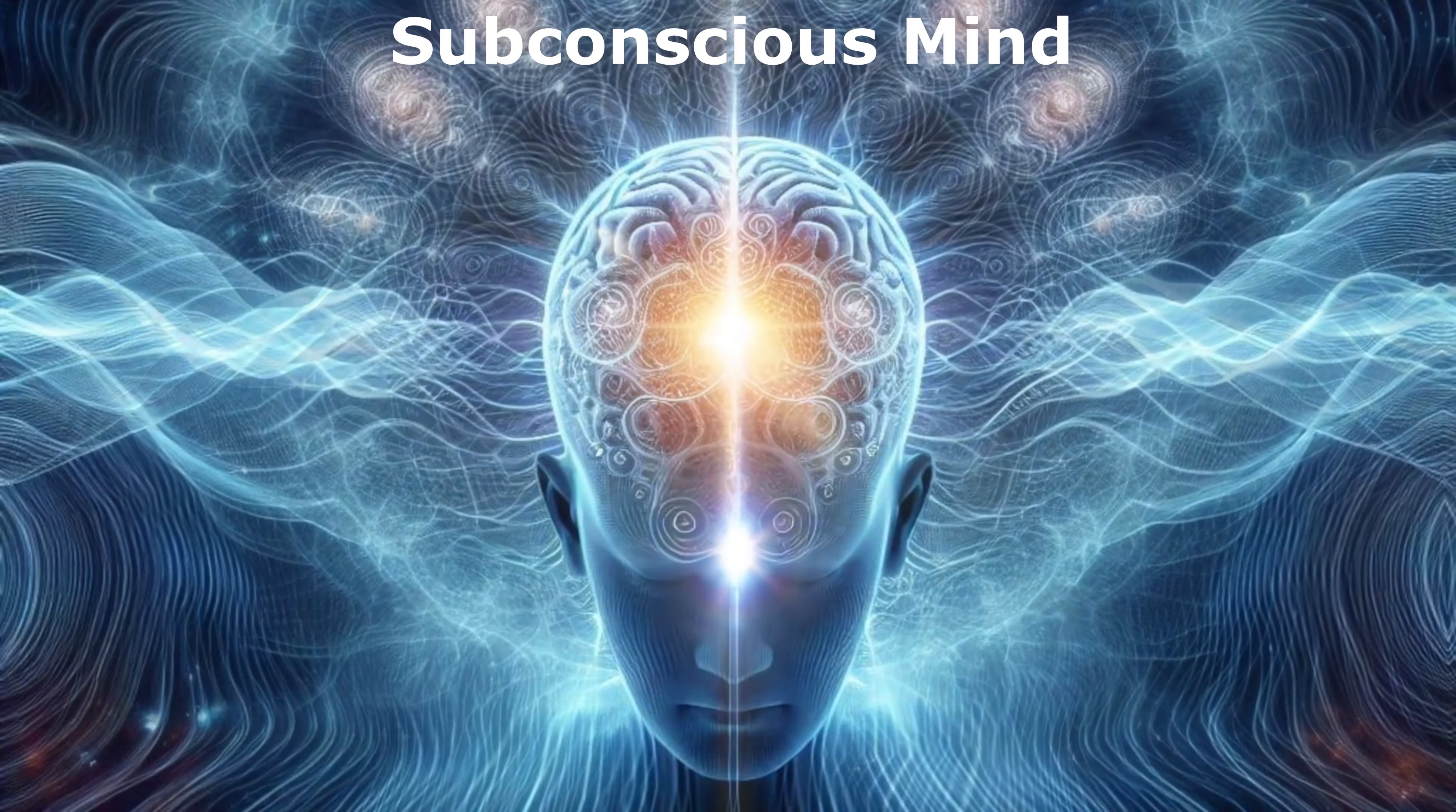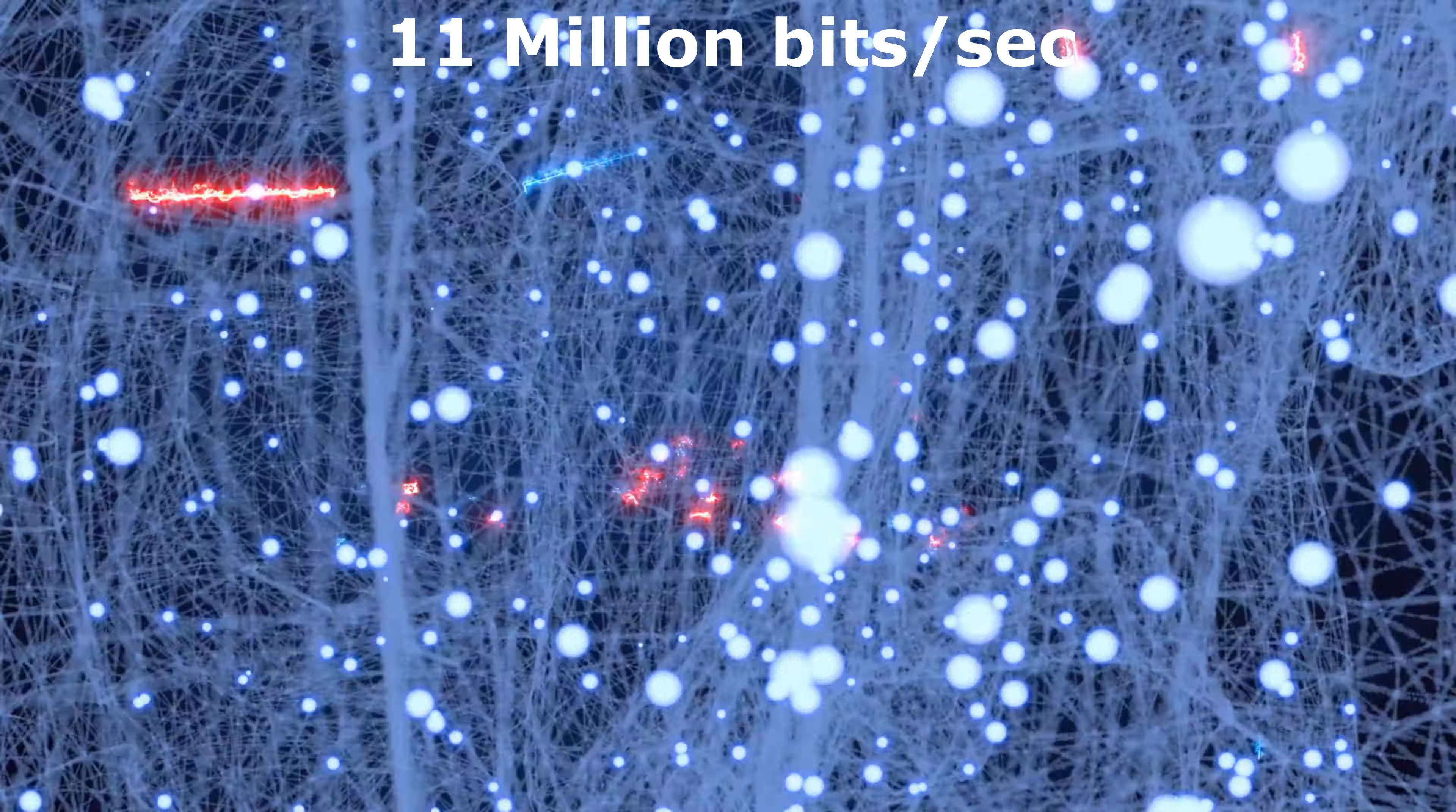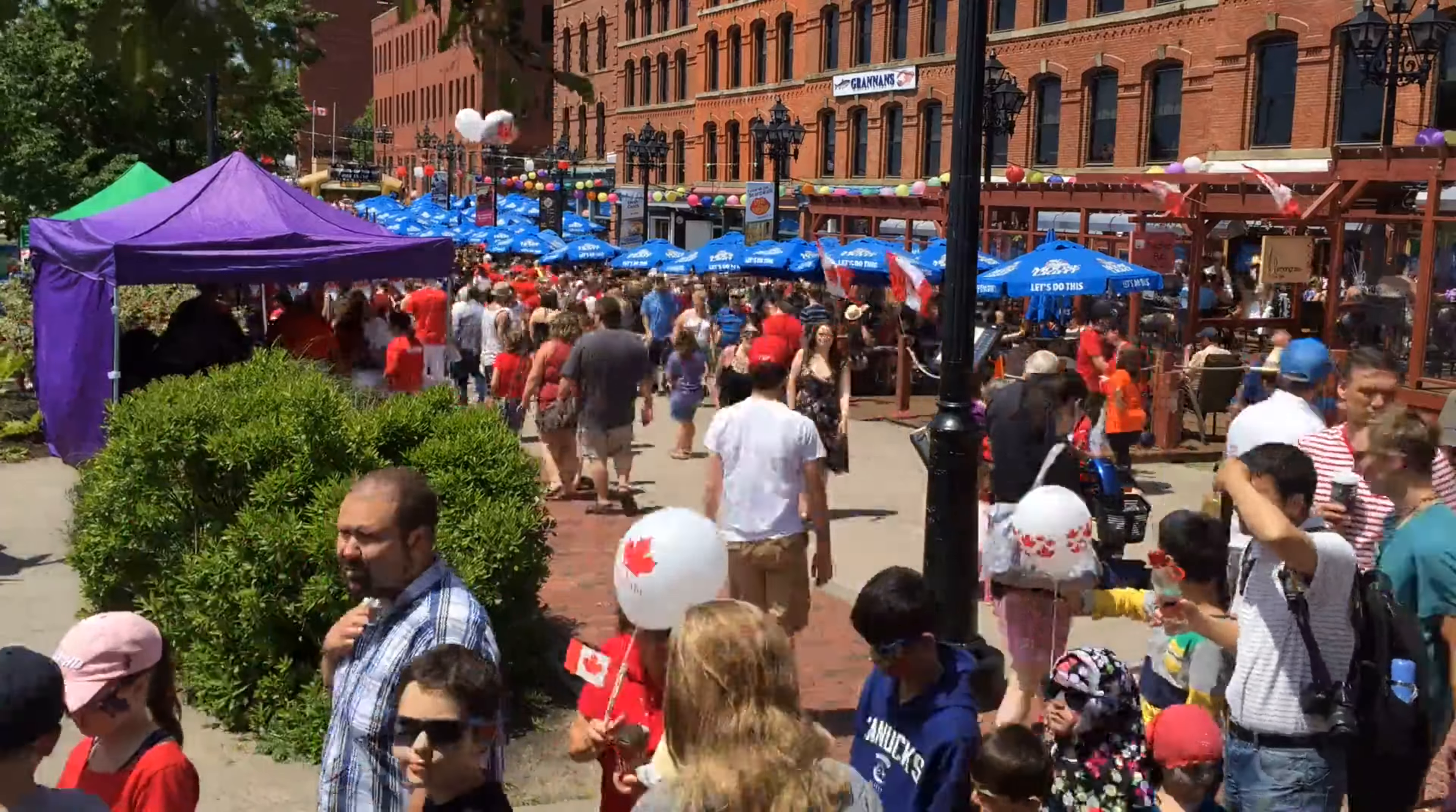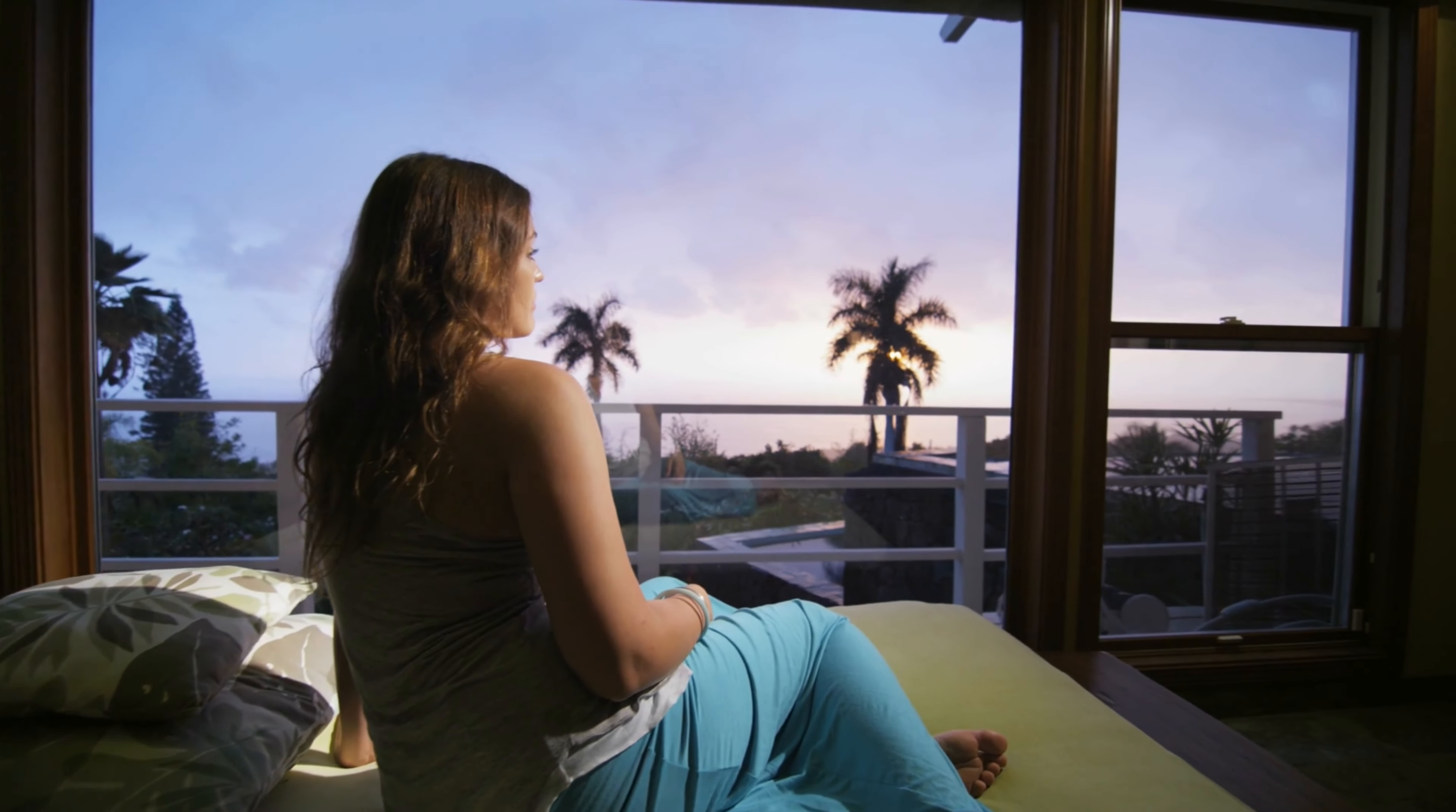Friends, do you know our subconscious mind is like a supercomputer running in the background? It processes around 11 million bits of information every second, while the conscious mind handles only about 40 bits per second. This incredible speed allows the subconscious to manage all the information our senses take in without us even being aware of it.